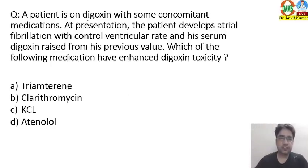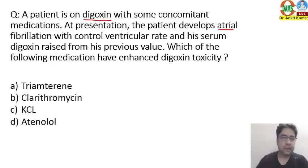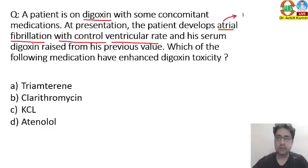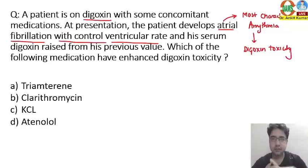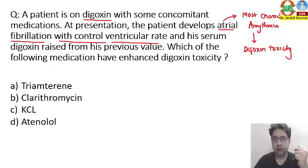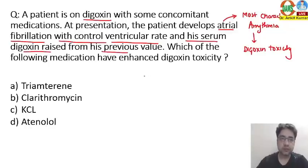A patient is on digoxin with some concomitant medication. At presentation, the patient develops atrial fibrillation with controlled ventricular rate. Remember, atrial fibrillation with controlled ventricular rate is the most characteristic arrhythmia due to digoxin toxicity. Digoxin increases sodium and calcium levels inside the heart causing atrial fibrillation, but it also leads to AV node block, so more impulses come but the ventricular rate remains controlled. The serum digoxin level is raised from his previous value.